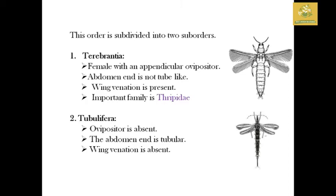The two suborders are Terebrantia and Tubulifera. In Terebrantia, the female has an appendicular ovipositor, the abdomen is not tube-like, and wing venation is present. The important family in Terebrantia is Thripidae. In Tubulifera, the ovipositor is absent and the abdomen is tubular, with wing venation absent. These are the key differences between the two suborders.